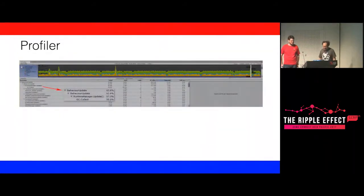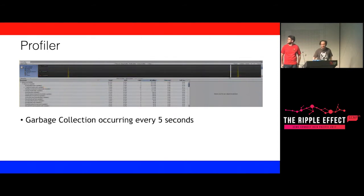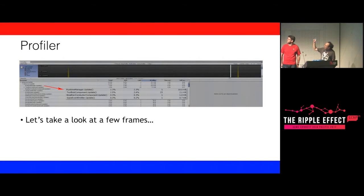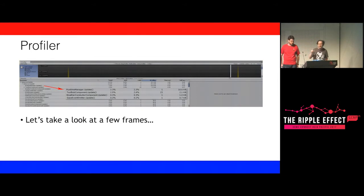Back to the profiler. We see these spikes and we noticed the garbage collector was basically running every five seconds — this is really bad. When we looked at the frame where the garbage gets collected, it appeared that the runtime manager itself was the problem, where the GC Collect call appears inside the runtime manager. That's where the spike is.